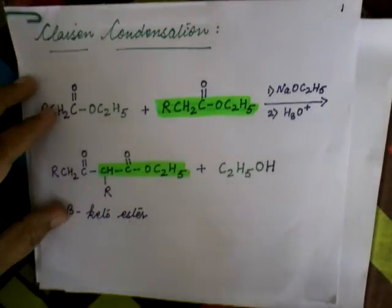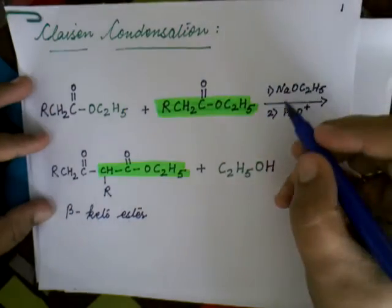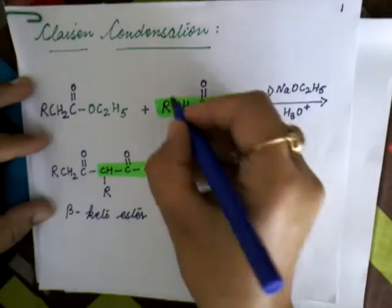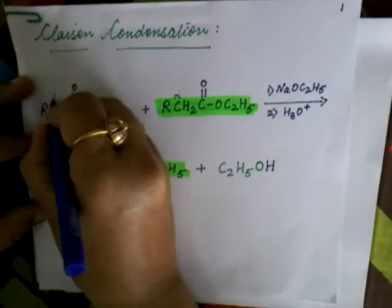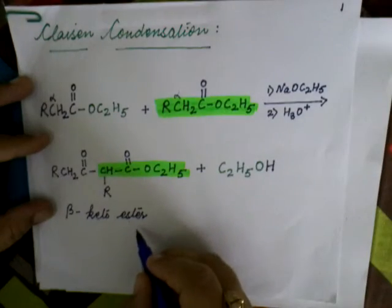Hello friends, I am Anjotpur and today we are going to learn about Claisen condensation. Claisen condensation occurs between two ester molecules having alpha hydrogen atoms in the presence of strong base like sodium alkoxide, and there is formation of beta-keto ester.